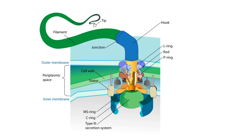The flagella mainly has three body parts: basal body, hook, and filament. In the basal body, there is a central rod, MS ring, C ring, L ring, and P ring. It is situated across the inner membrane, periplasmic space, and the outer membrane. From there is the hook, and from the hook extends to the filament — the tip of which is also called the tip. So the three major parts are basal body, hook, and filament.